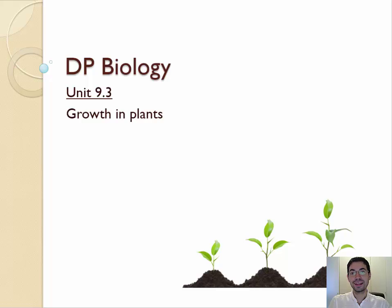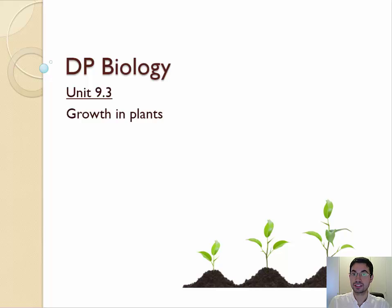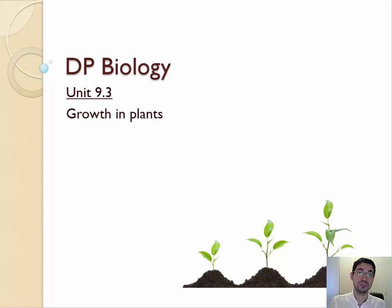Hello everyone! Let's dive right into 9.3, growth of plants. This is a higher level lecture and our third on botany. Here we're really going to be looking at how plants grow, specifically looking at the regions in which they grow, called meristems, and looking at the effect of various hormones on their growth, such as auxin, which promotes phototropism. So some fun words coming up.